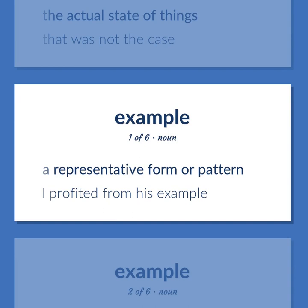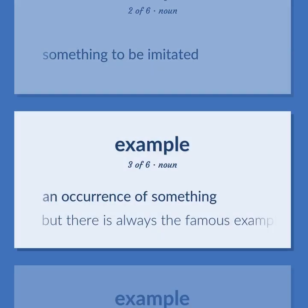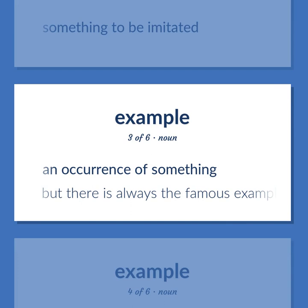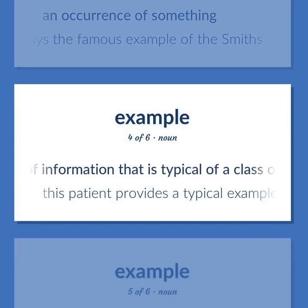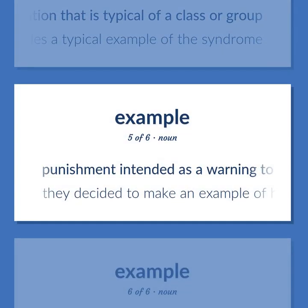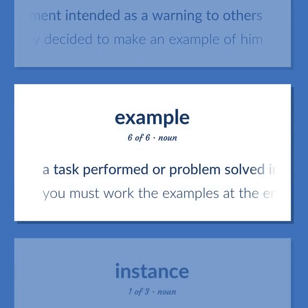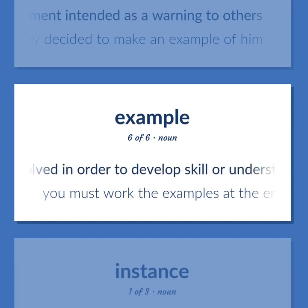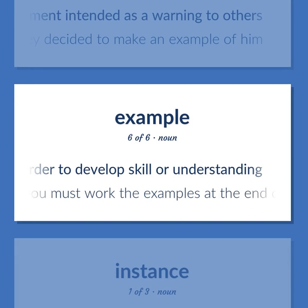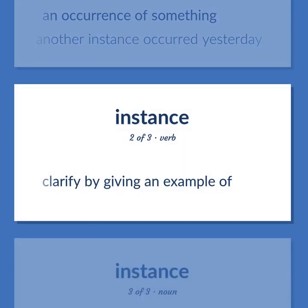Example: A representative form or pattern. I profited from his example. Something to be imitated. An occurrence of something. But there is always the famous example of the Smiths. An item of information that is typical of a class or group. This patient provides a typical example of the syndrome. Punishment intended as a warning to others. They decided to make an example of him. A task performed or problem solved in order to develop skill or understanding. You must work the examples at the end of each chapter in the textbook. Another instance occurred yesterday. Clarify by giving an example of.